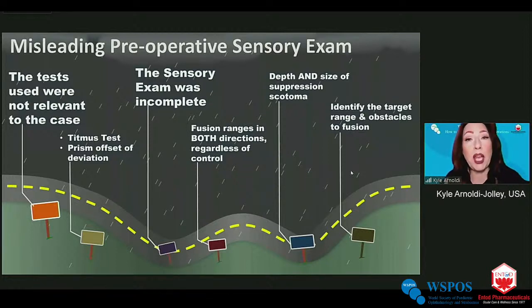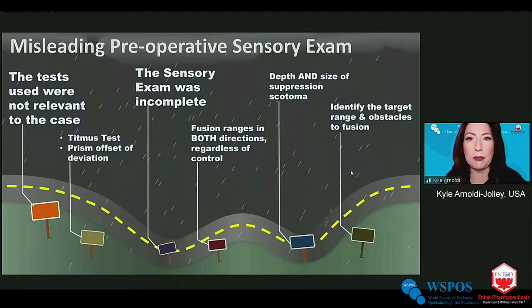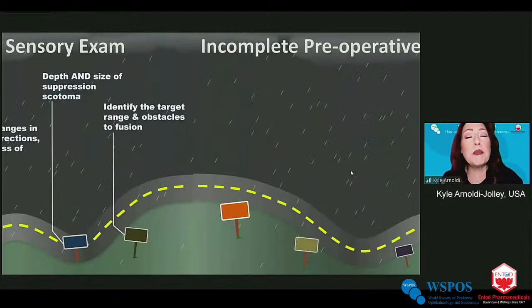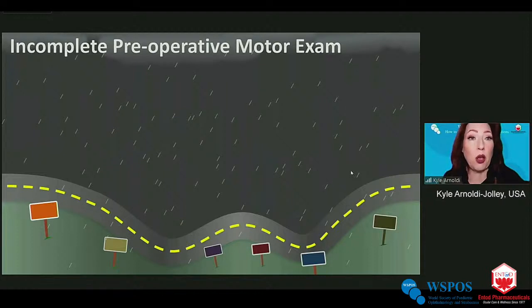To answer those questions, I look at fusion ranges in multiple directions regardless of the patient's control. We always think of checking motor fusion with intermittent deviations, but constant deviations may surprise you — they may have some fusion reserves. I also look for the depth and size of the suppression scotoma, and most importantly I want to identify the target range for alignment and the obstacles to fusion. There are some pitfalls on the motor examination as well.